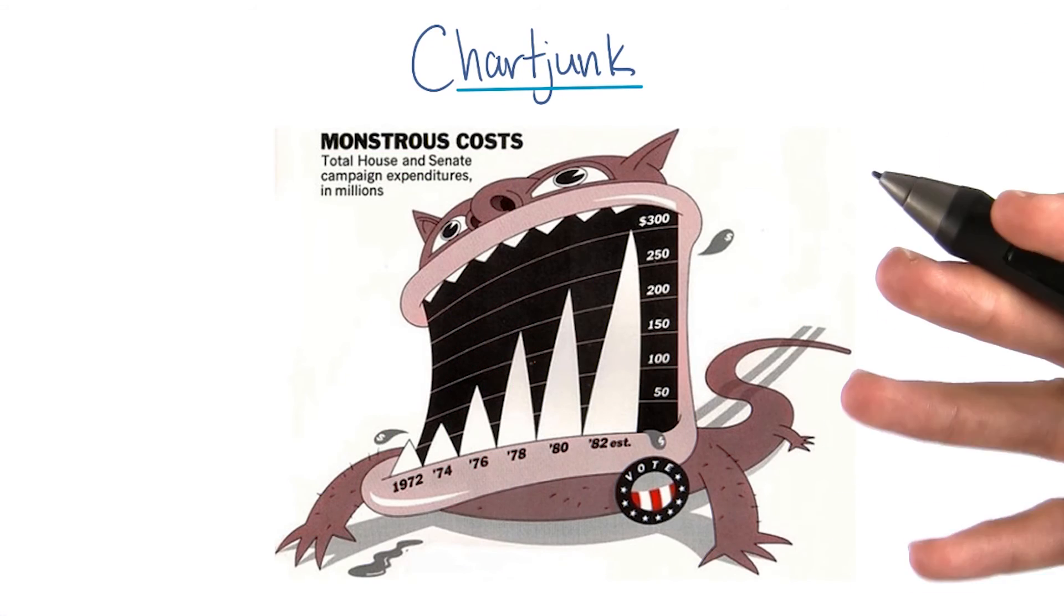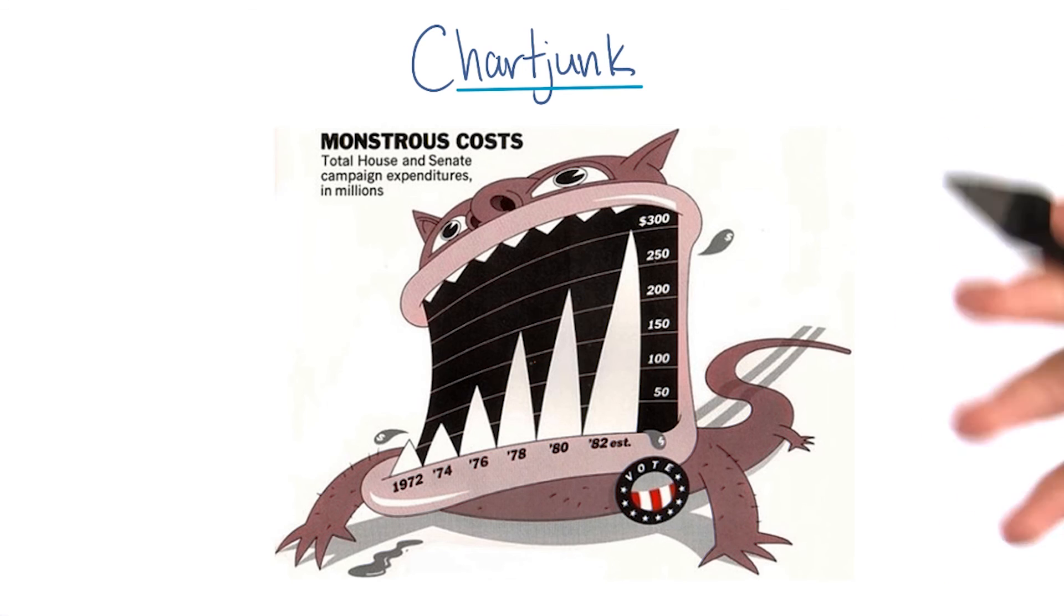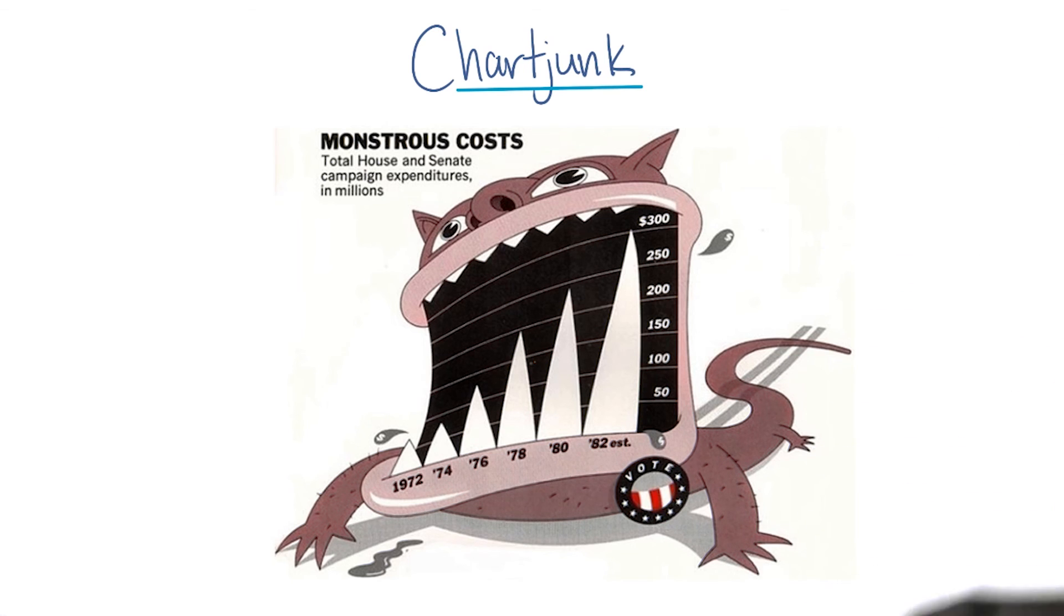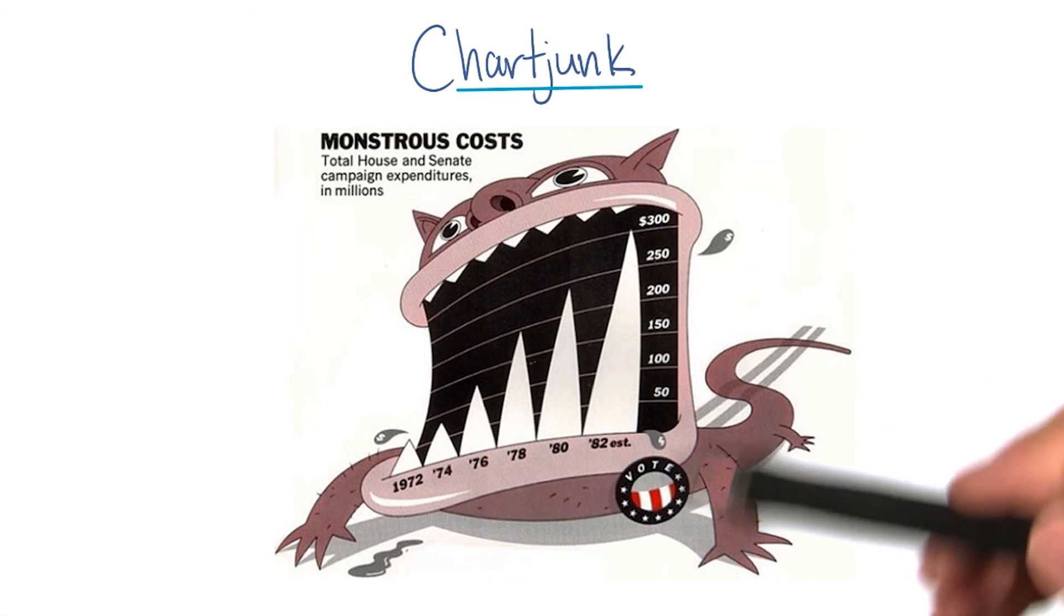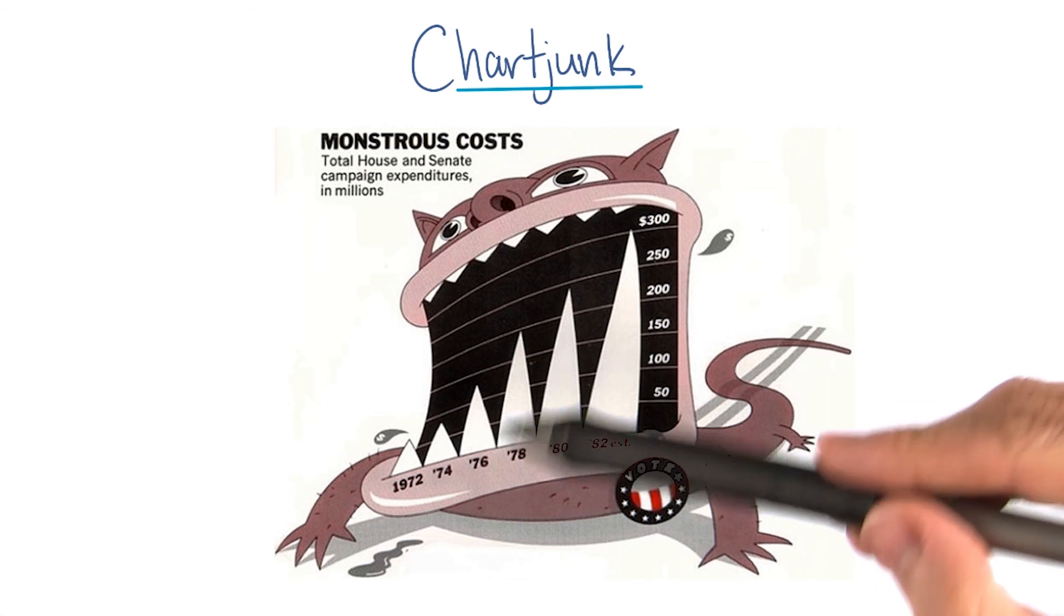Another kind of chart junk skews the depiction and makes it difficult to understand the real data being displayed. Examples of this type include items depicted out of scale to one another, like the monstrous teeth shown here.